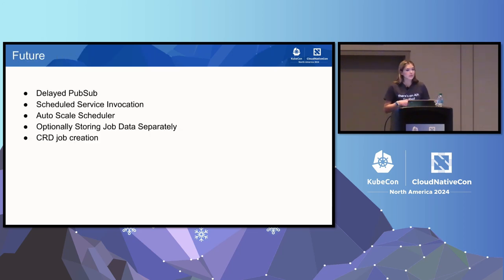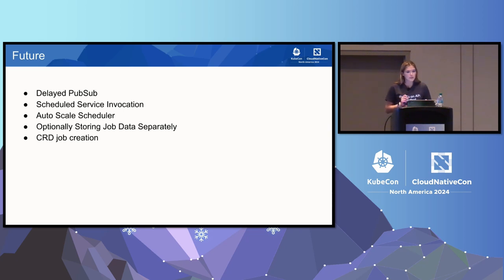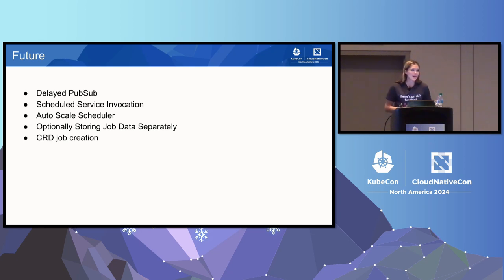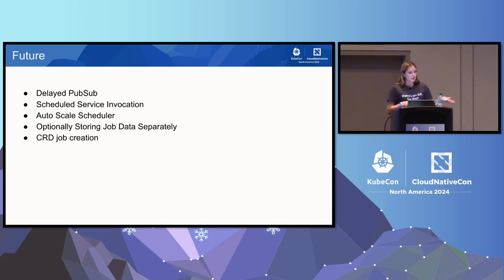In the future, we will be allowing even more types of jobs. We have a PubSub API, so we will be enabling delayed PubSub calls — publishing a message at a specific point in time in the future. Then scheduled service invocation, enabling the scheduling of method calls between your applications. And of course auto-scaling the scheduler, which is a little more complicated because we have the etcd database inside — beyond three, we'll take out etcd and scale using the existing etcd instances. Optionally, storing the job data separately: if you don't want data to live in etcd, it can live in Postgres or another state store. And for feature parity with our cron binding, we'll allow CRD job creation so you can run kubectl apply -f to create a job.